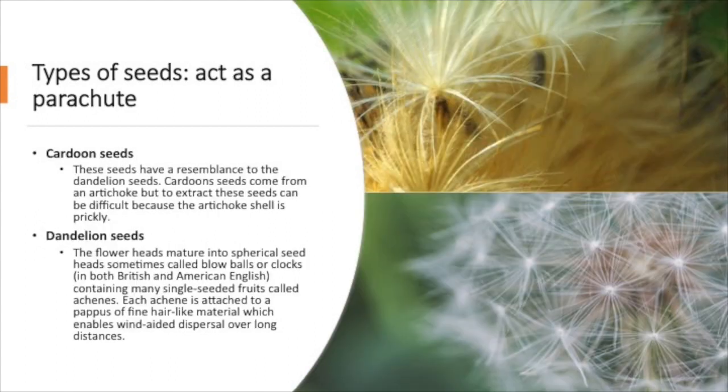Then you have your other types of seed that act as a parachute. So you have a cardoon seed. And if you would actually see these, you can probably see them in your own grocery store because they are from an artichoke shell. And so these seeds have a resemblance to the dandelion seeds because they sort of look like a parachute when they fall. But you do have to be careful though when you extract these seeds from an artichoke because they are very, very prickly and pointy and can hurt you.